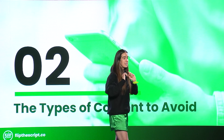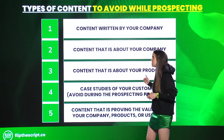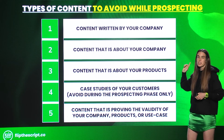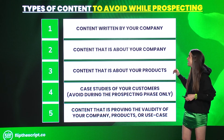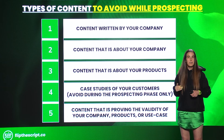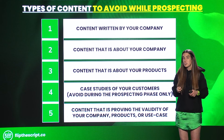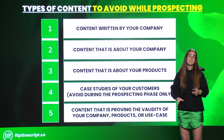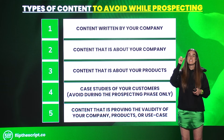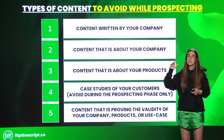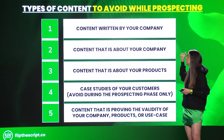Number two, I wanted to go into the types of content I would avoid while prospecting. The first type I would avoid is essentially first party content — any content written by your company. And before all the product marketers murder me with the hate mail, hear me out. In the prospecting context, this is someone you haven't gotten a response from yet. Sending over content written by your company carries an inherent perceived view that you shouldn't trust it because someone's trying to sell you something.